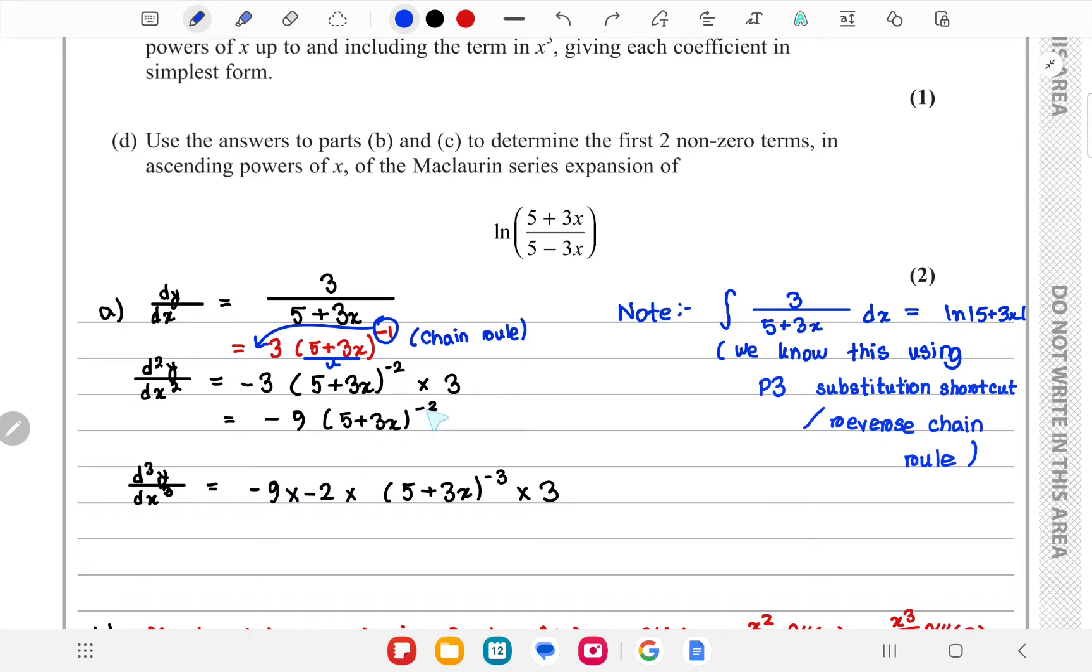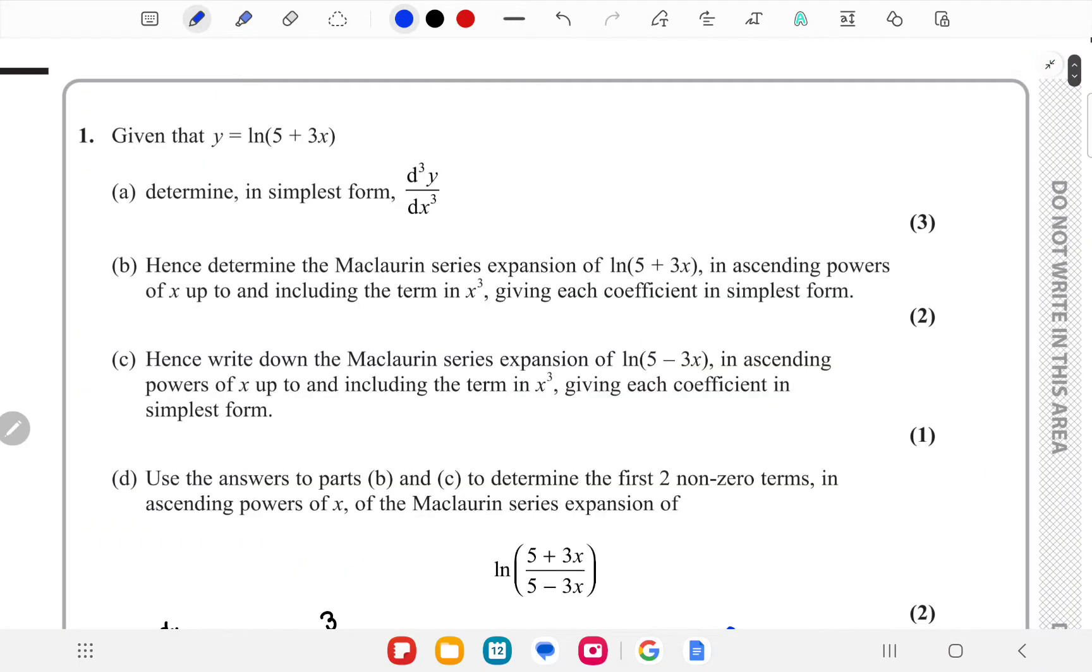Basically using the chain rule again, we get this expression over here. That's it with part a. Now moving on to part b, we need to use the Maclaurin series to find the series expansion of ln(5+3x) in ascending powers of x up to x³.